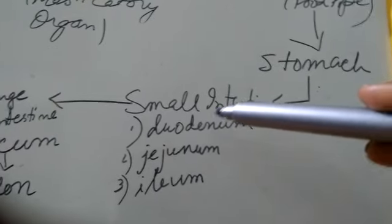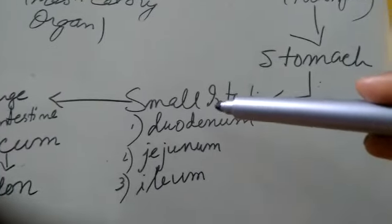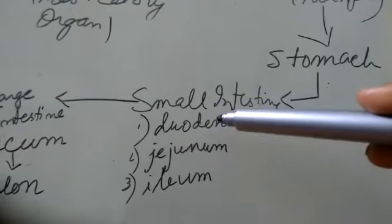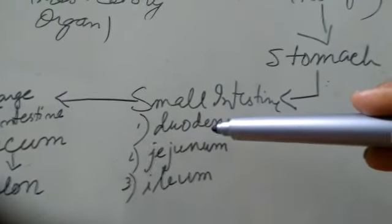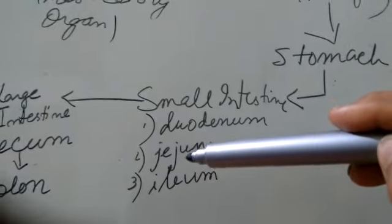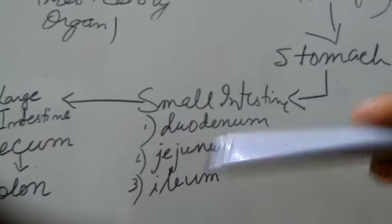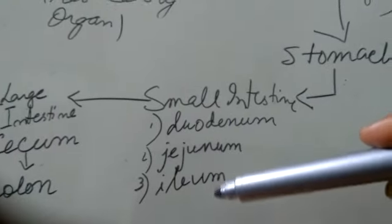The junction between the small intestine and stomach is J-shaped and called the duodenum. From the duodenum, food goes to the jejunum and finally the ileum. In these three parts, protein, lipids, and fats are digested.